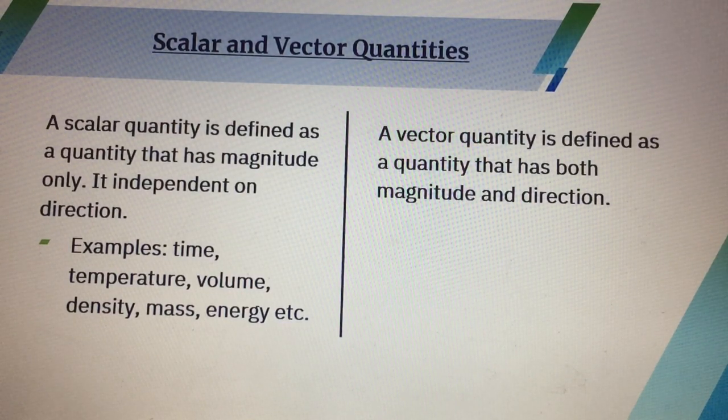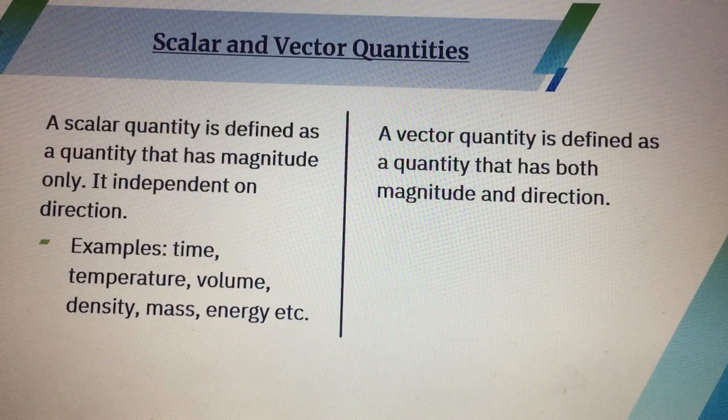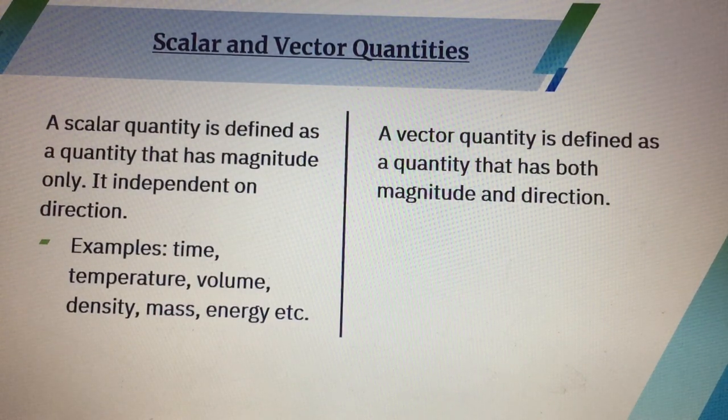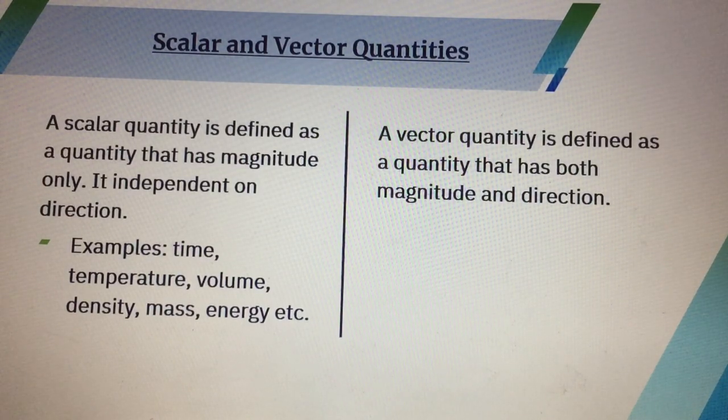So when we show vector quantity, we need magnitude, any positive or negative number. Second, unit. And third, direction. So vector quantity, we must need magnitude, unit and direction.